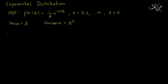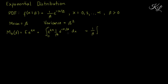Let's now derive the moment generating function for the exponential distribution. The formula for the moment generating function is expectation of e raised to tx, which equals the integral from 0 to infinity of e raised to tx times the probability density function dx. Moving out the constant 1 over beta, and combining both exponentials, we get 1 over beta times the integral of e raised to negative (1/beta minus t) x dx from 0 to infinity.